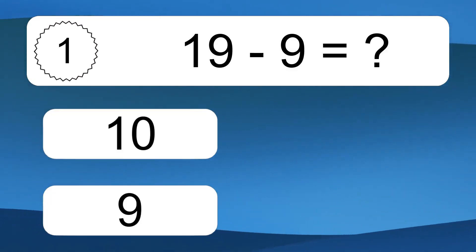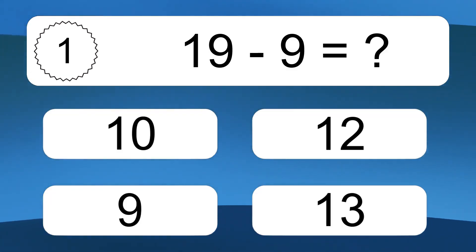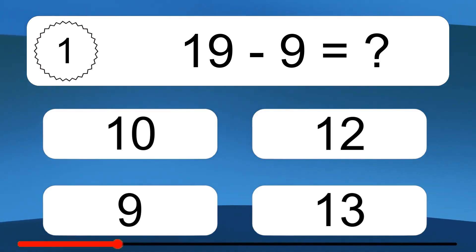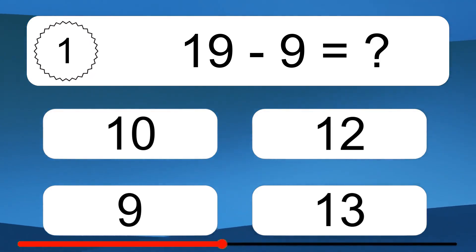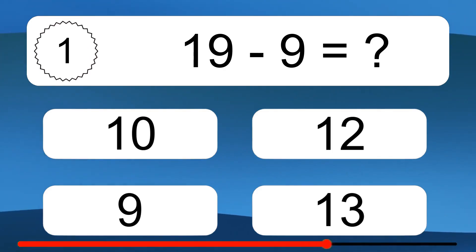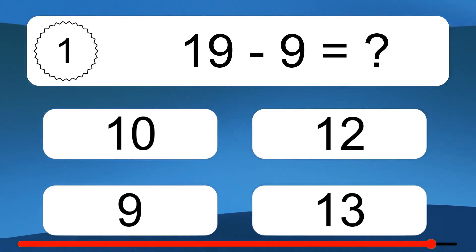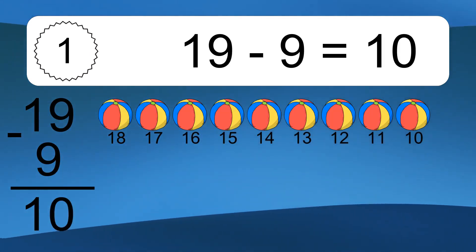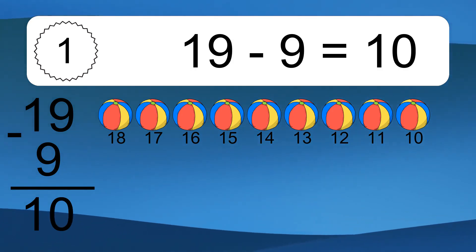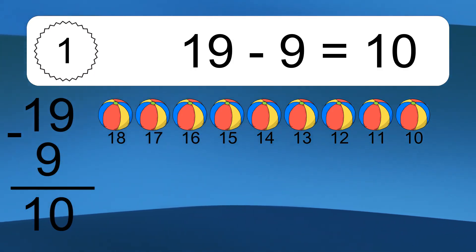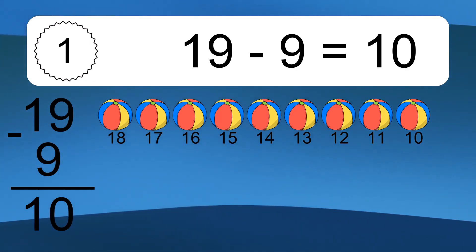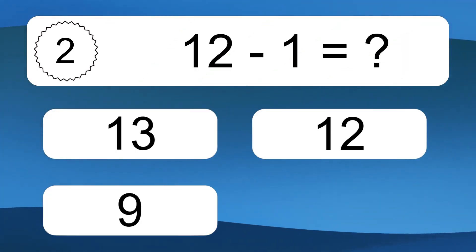19 minus 9 equals what? 19 minus 9 equals 10. Let's count it: 18, 17, 16, 15, 14, 13, 12, 11, 10.